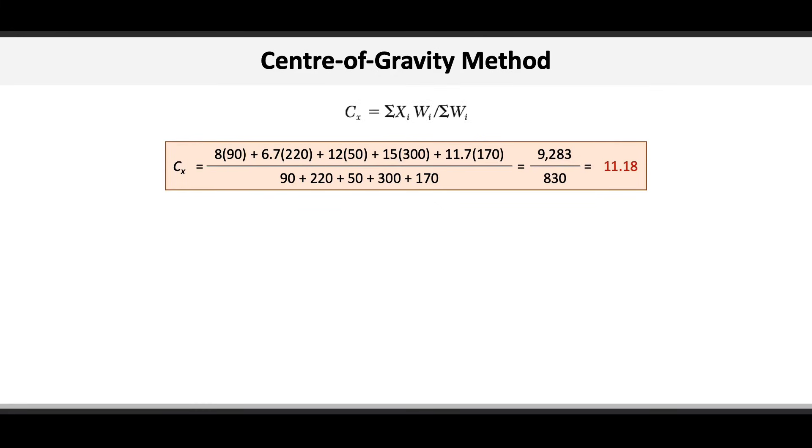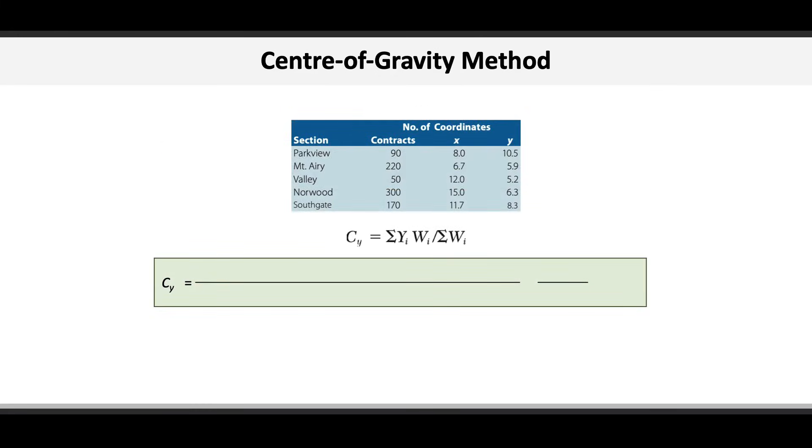Now we go ahead and do the same for the y coordinate, Cy. In the numerator, we take 10.5 times 90, plus 5.9 times 220, plus 5.2 times 50, plus 6.3 times 300, plus 8.3 times 170. Again, you see where the 10.5 and 5.9, etc., are the y coordinates from the individual areas, and the numbers inside the brackets are the same weights used in the calculation for the x coordinate.